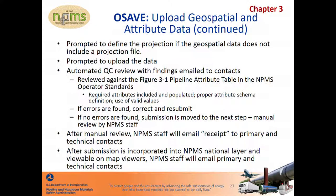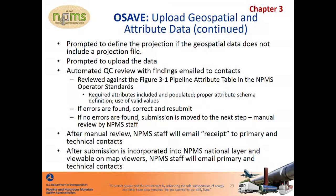When the automated QC review has completed, the primary and technical contacts and logged-in user will receive an email with the results. If errors were found, the problems are listed in the email. You will need to correct the errors and resubmit the data through the same OSAVE workflow. If no errors were found, the email will state that, and the submission will be placed in the queue for NPMS staff action — the manual review. During the manual review, NPMS staff will look for potential errors like pipelines that were excluded without explanation, pipelines that were added but have a revision code indicating they previously existed, abandoned pipelines missing the required certification, and whether the NPMS submission data mileage matches the annual report. If questions arise during the manual review, NPMS staff will contact you for clarification or resubmission.